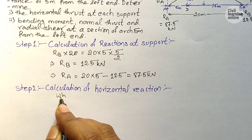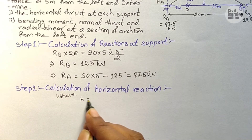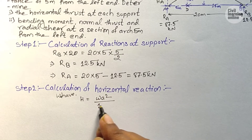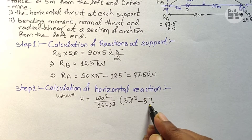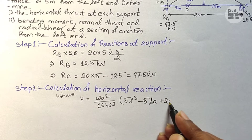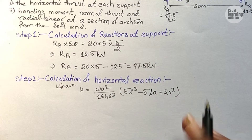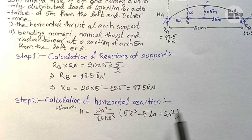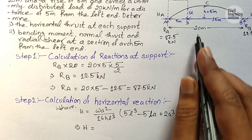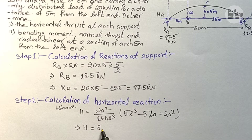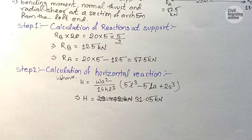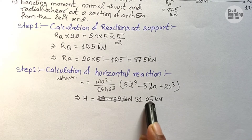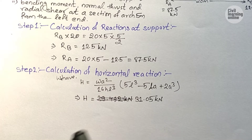Step 2 — Calculating the horizontal reaction. Using the formula for Case 4 with w = 20 kN/m, a = 5 m, L = 20 m, and h = 5 m: H = (20 × 5²)/(16 × 5 × 20) × (5×20² − 5×20×5 + 2×5²). Solving, we get H = 31.05 kN.